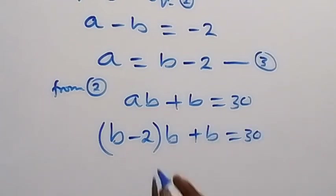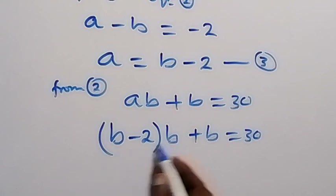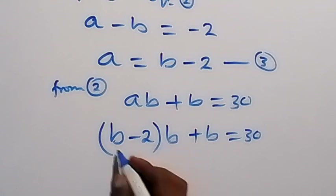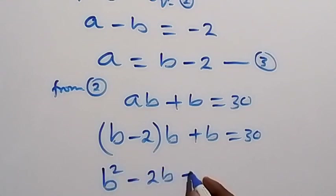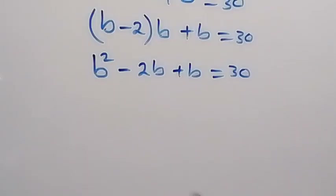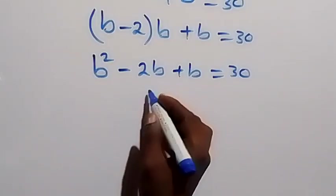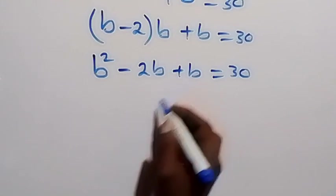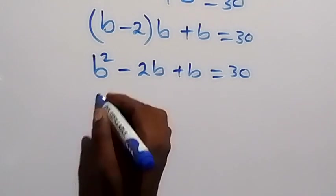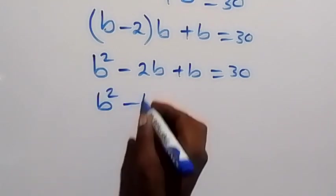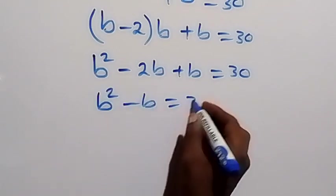And when we open the bracket here, we expand, multiply by B here. So, this gives us B times B. That's B squared. Then, minus 2B. Then, plus B equals to 30. And from here, in the next step, we add this together. Minus 2B plus B gives us minus B. So, we have B squared minus B equals to 30.